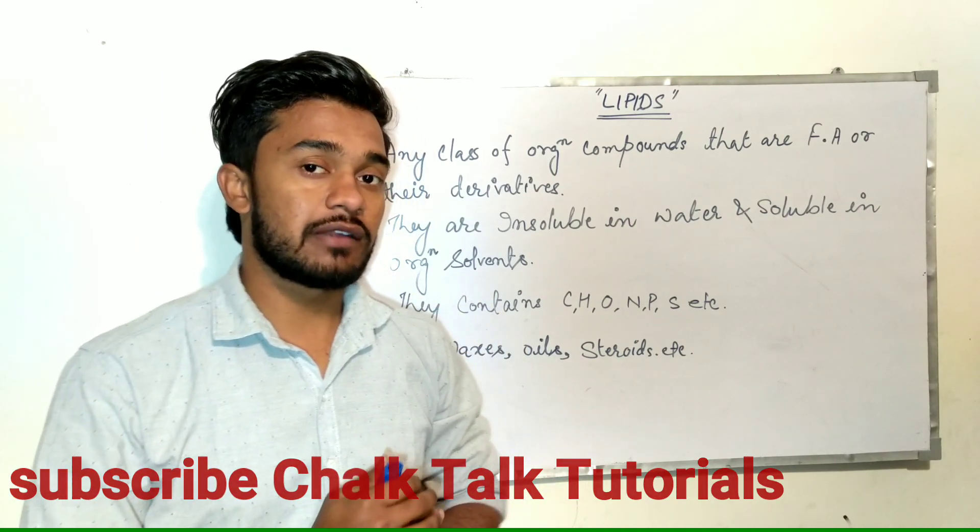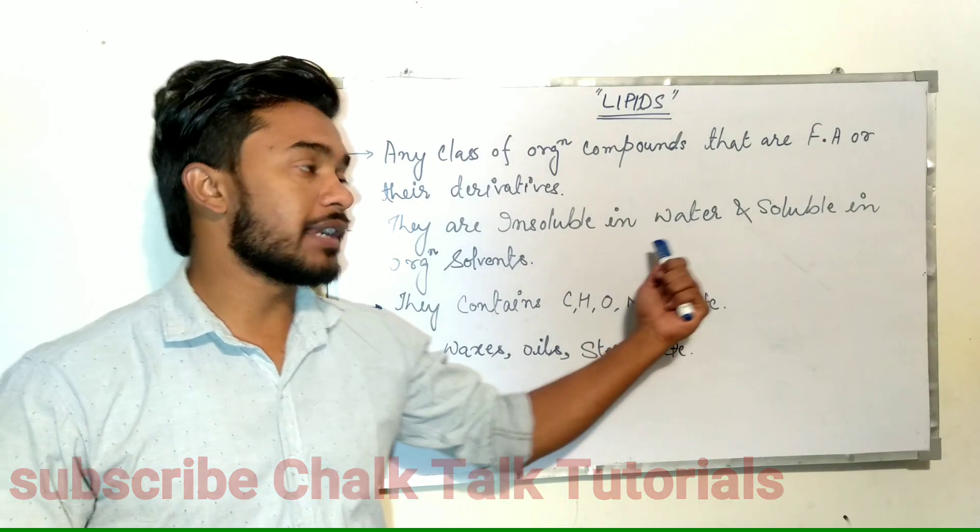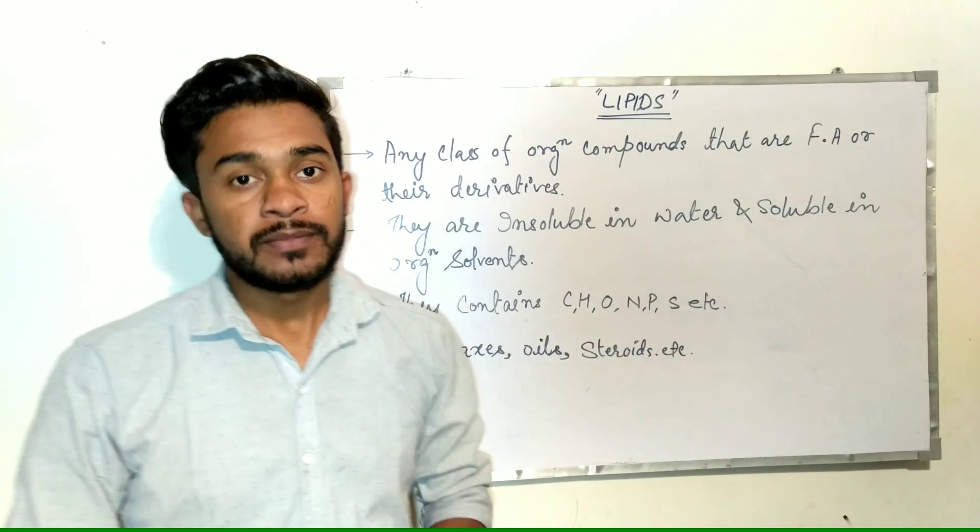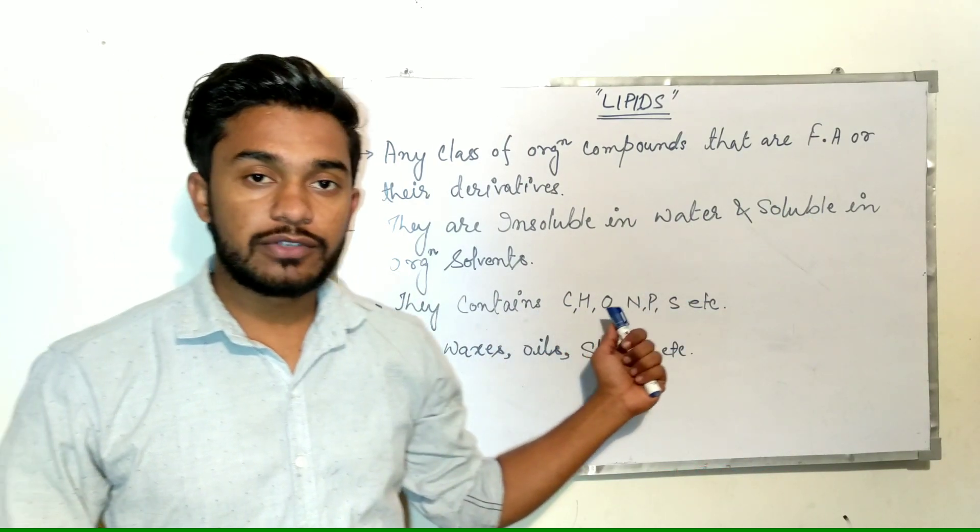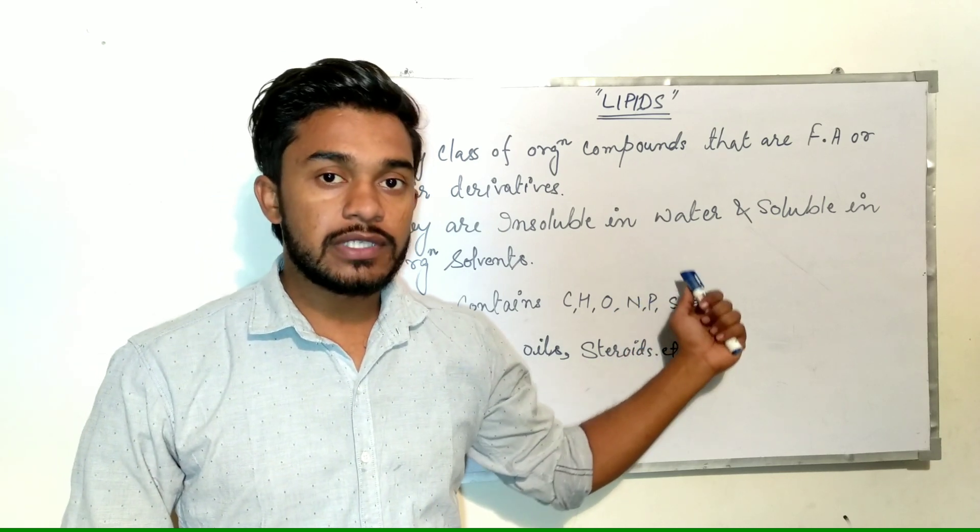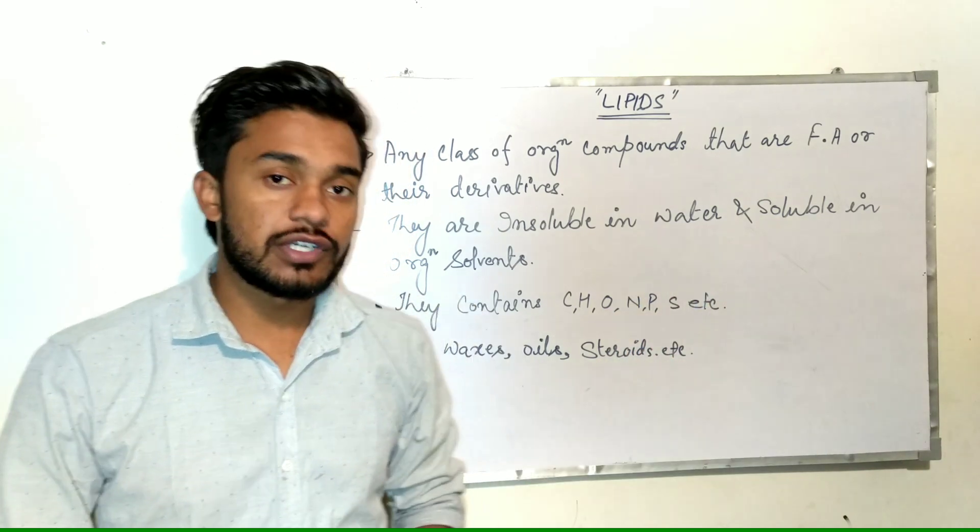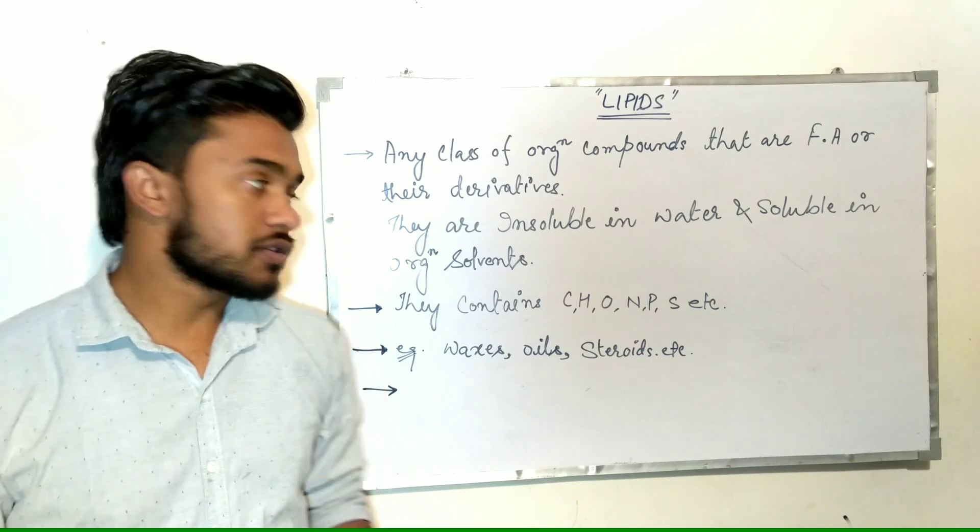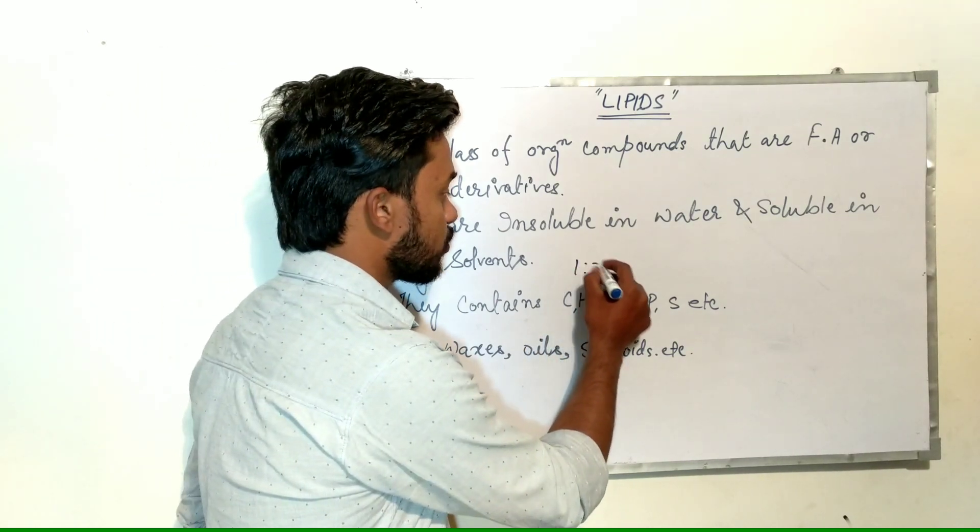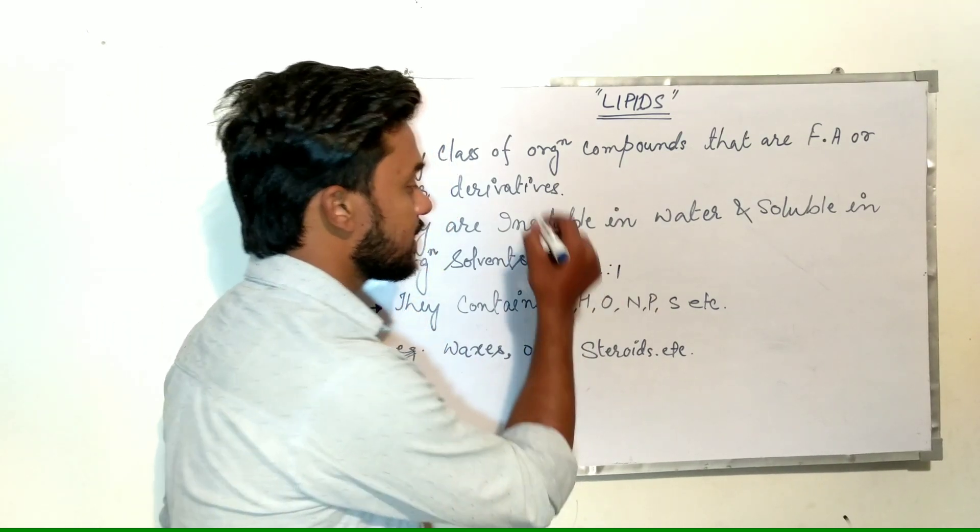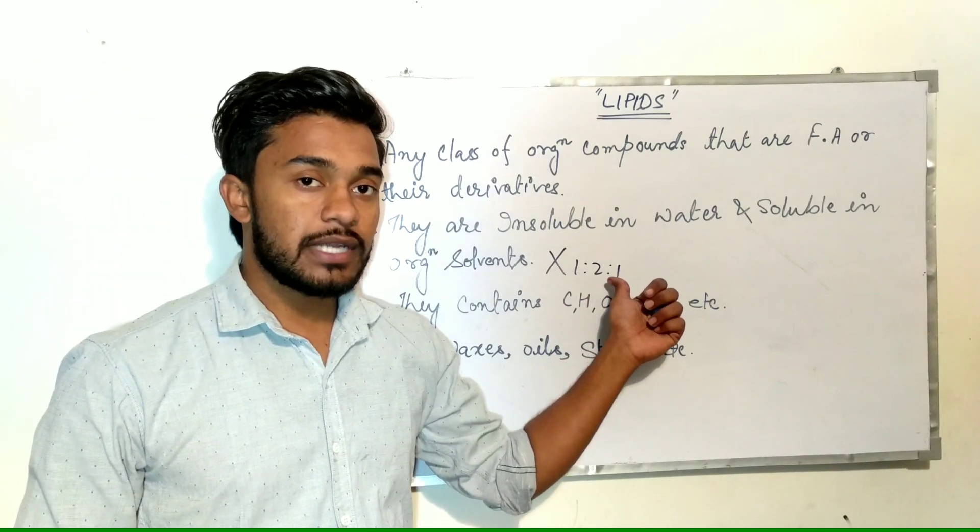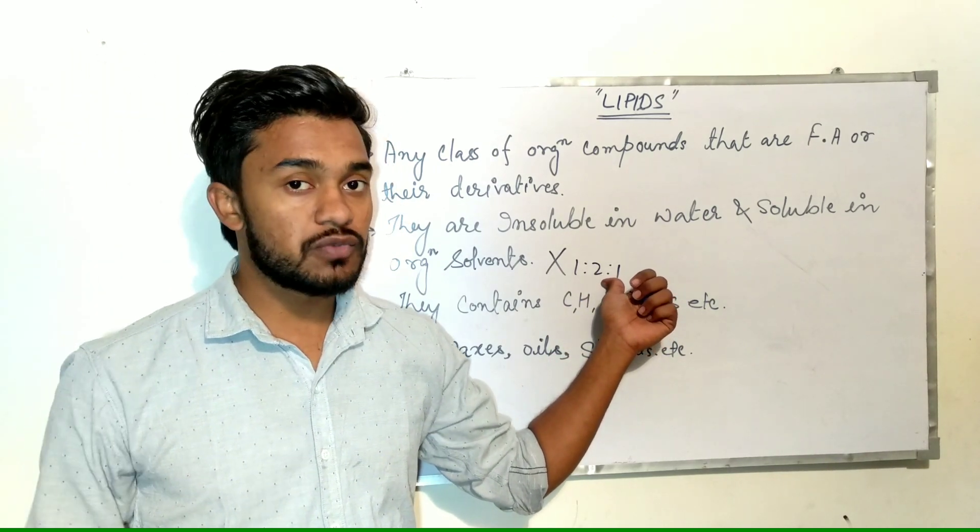They are insoluble in water and soluble in organic solvents. They contain carbon, hydrogen, oxygen, phosphorus, nitrogen, and sulfur in their structures. Carbon, hydrogen, and oxygen do not present in 1:2:1 ratio as in carbohydrates. In lipids, the carbon, hydrogen, and oxygen ratio varies.